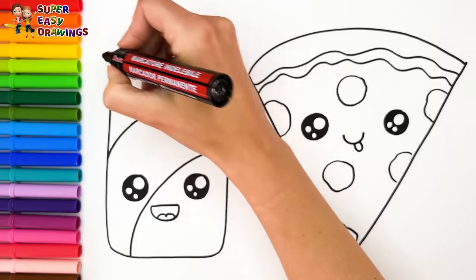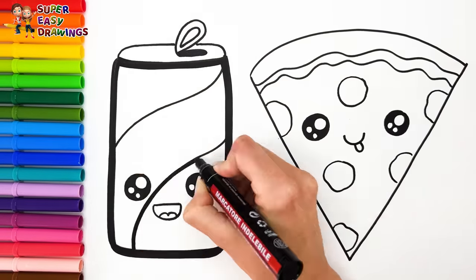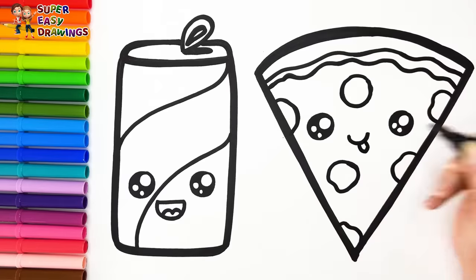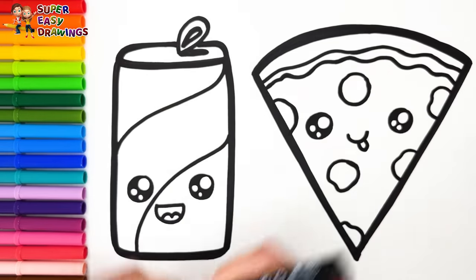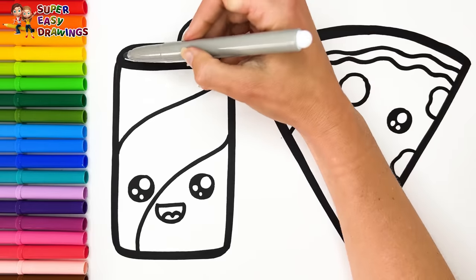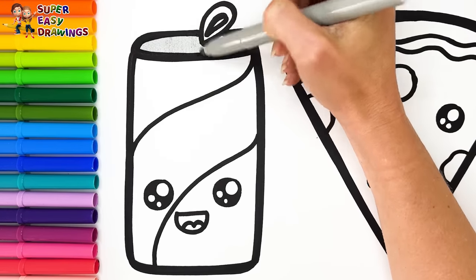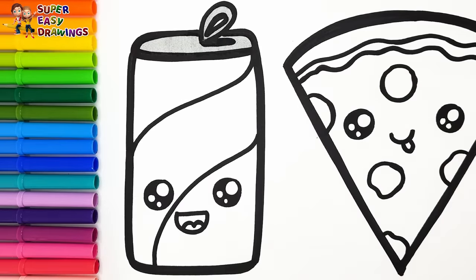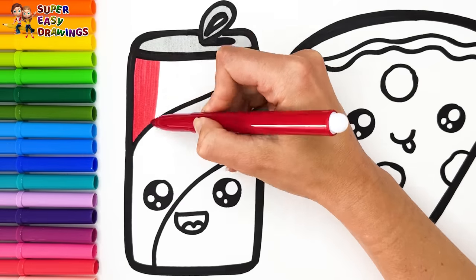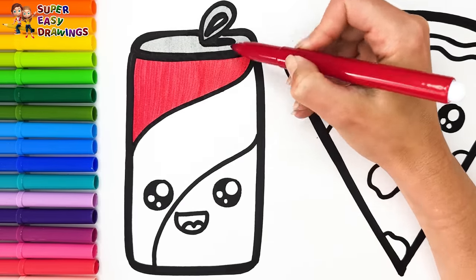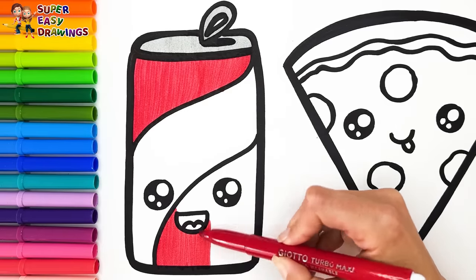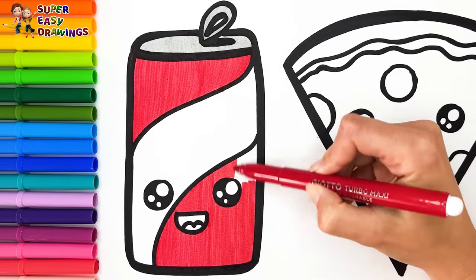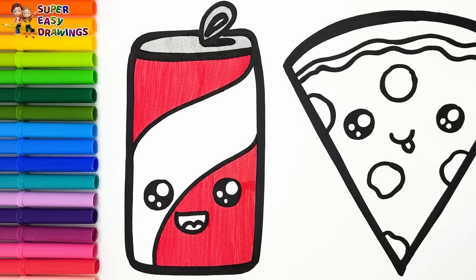Now I'm going to use this black marker to make this beautiful drawing more visible. Let's start coloring. I colored the coke. I used gray, red, and blue.